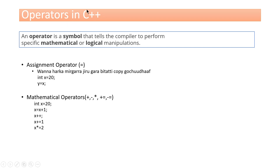x plus plus is the same as x plus 1. By the way, C plus plus is the same as the increment operator. The increment operator is the same as in the C language. So, x plus plus means x equals x plus 1.